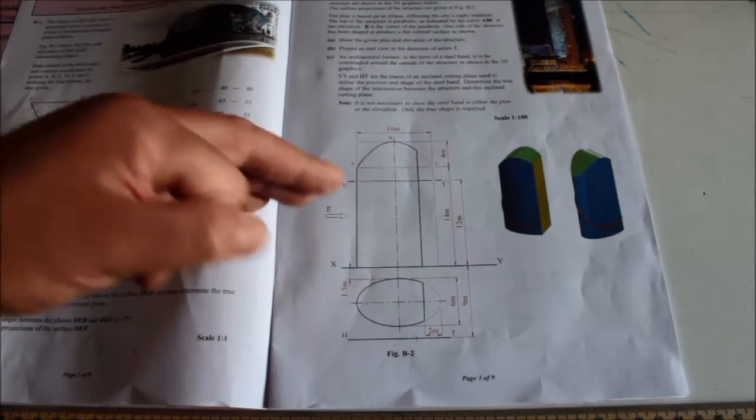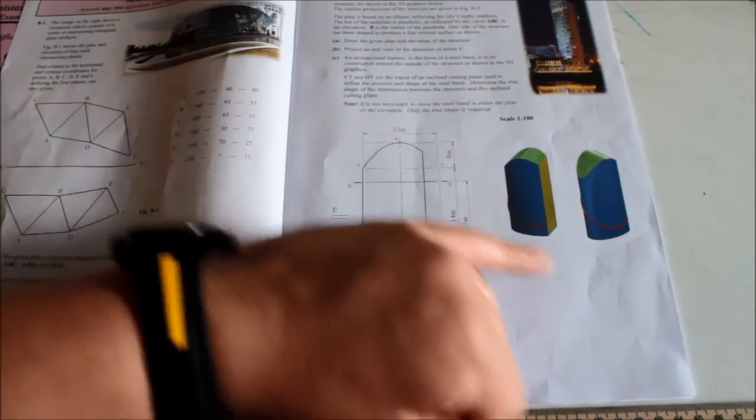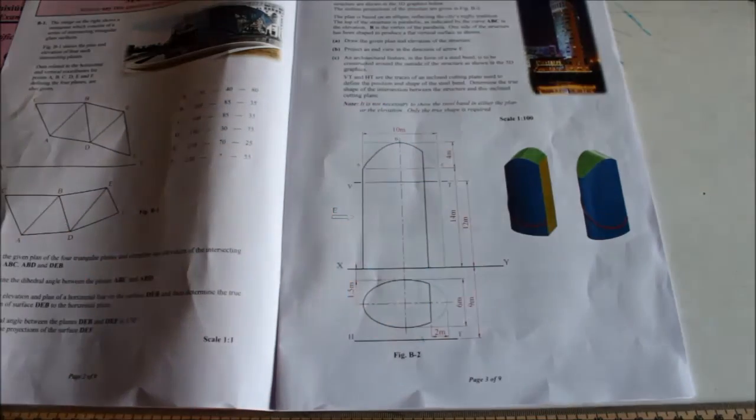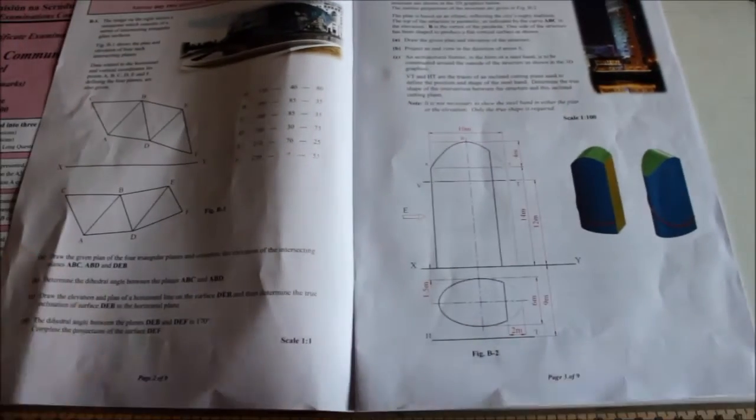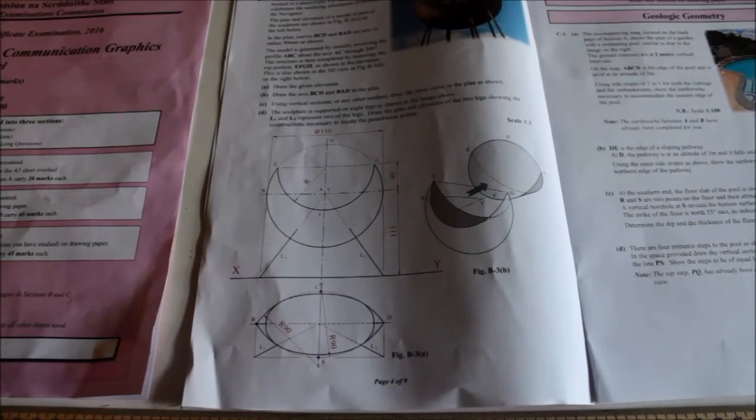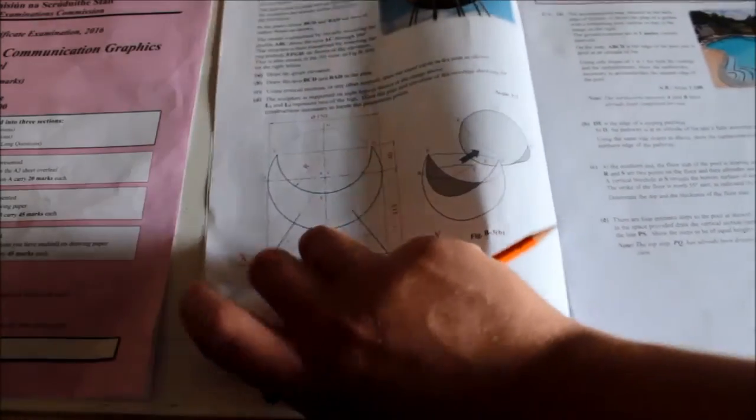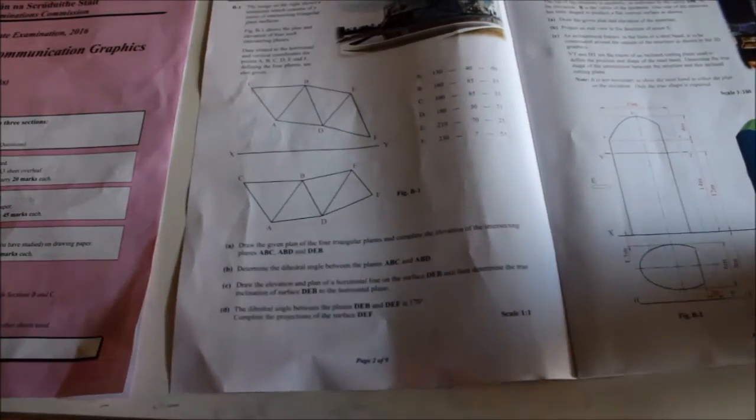They tell you to do an end view by projecting that plane in the end view. Finding the vertical trace, finding the horizontal trace, and join them to get the plane to get an edge view of the plane. You can see where it's cutting through your tower or hotel in this case, and you can get the true shape. I'll go through that one as well. Again, you do two out of three. Part B3: orthographic projection and a bit of rotation as well. Not really sure how to describe this question, but it doesn't matter because you only do two out of three in section B, and you should be able to do those two there. I'm very happy with that.